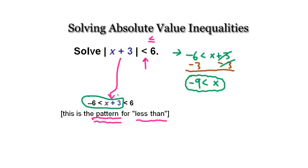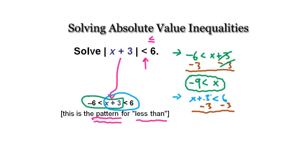Let's do the exact same thing for this other inequality: x plus 3 is less than 6. So it's a one-step equation — I'm just going to subtract 3 from both sides. This gives us x less than 3, and that's our inequality.